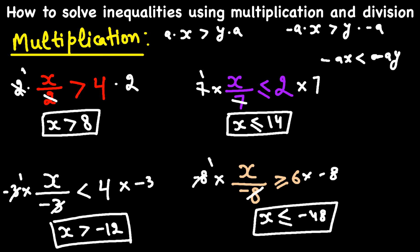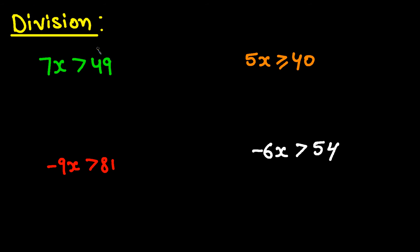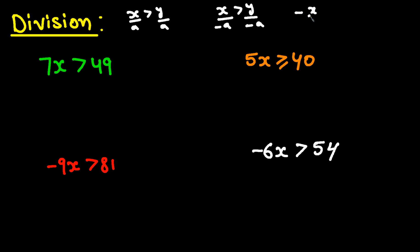Now let's do some examples with division. The same rule applies: dividing each side of an inequality by a positive number produces an equivalent inequality, just like X greater than Y divided by a positive value. But whenever you are dividing by a negative number, you need to reverse the direction of the inequality symbol.